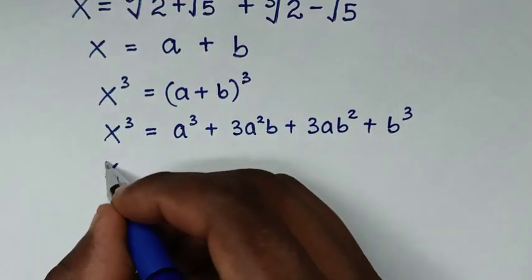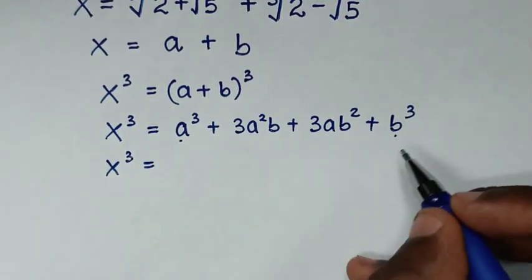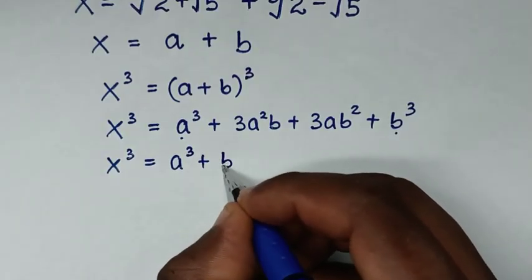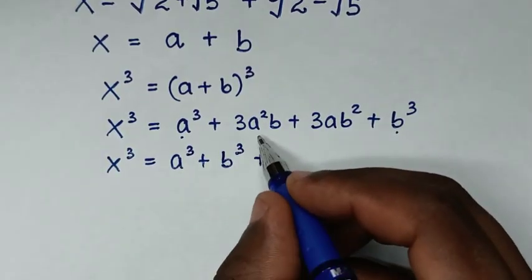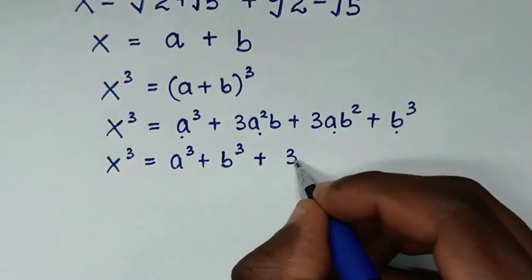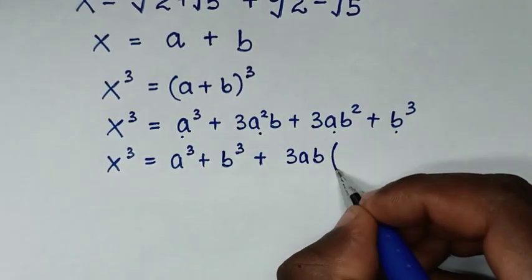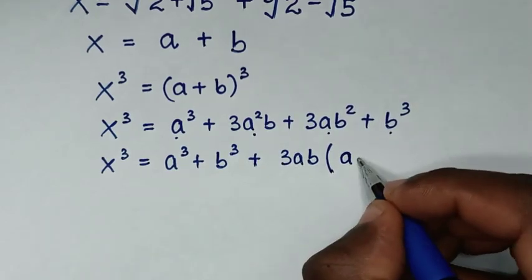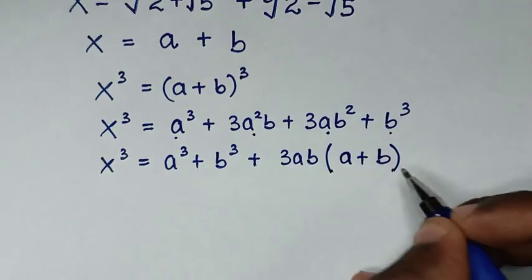It will be x cubed is equal to a cubed plus b cubed, then plus the remaining terms where 3ab is common, so we take it out of the bracket, giving 3ab times (a plus b).